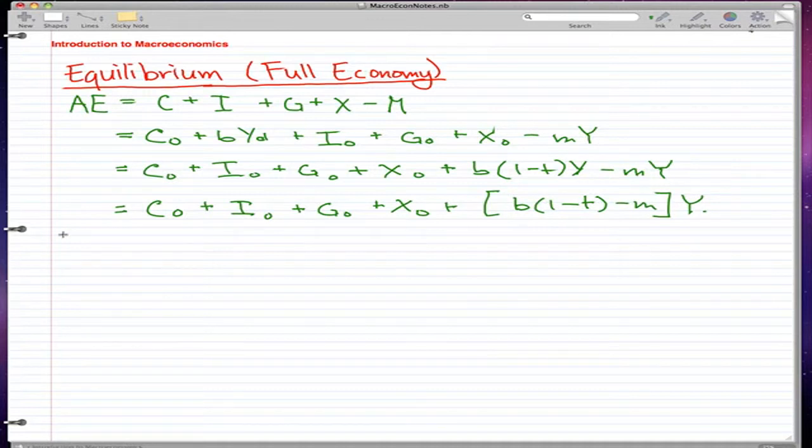and comparing this to our formula that we've talked about over and over again, that AE is equal to AE0 plus ZY. Without telling you, I'm sure you've already guessed what AE0 and Z are, what their values are right now.